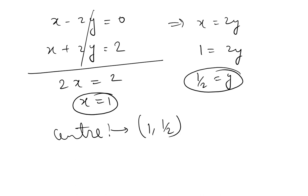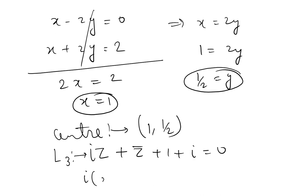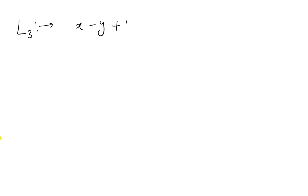Now the tangent line L3 is also given. Substituting iZ + Z̄ + 1 + i = 0 with z = x + iy and z̄ = x - iy: ix + i²y + x - iy + 1 + i = 0, which simplifies to L3: x - y + 1 = 0. Now we need to find the radius.